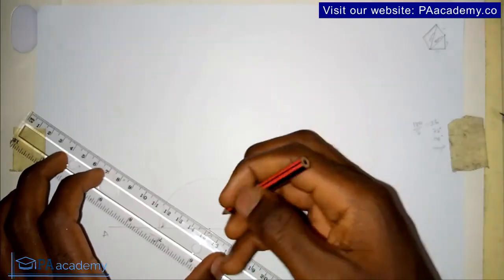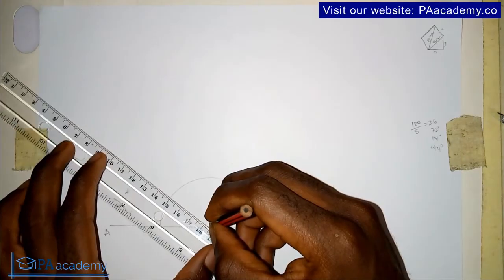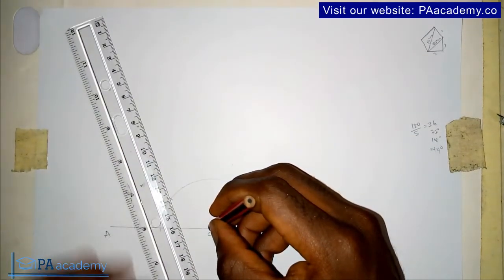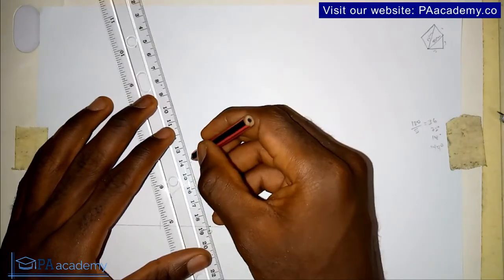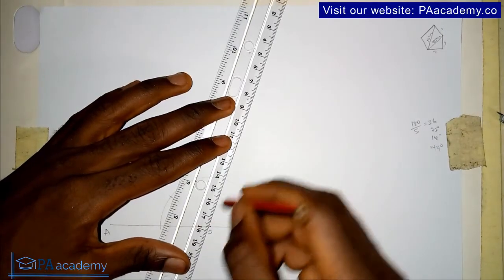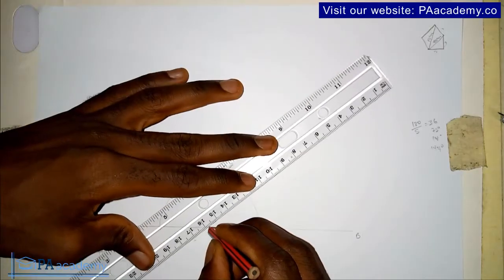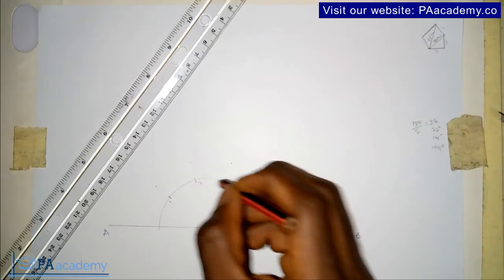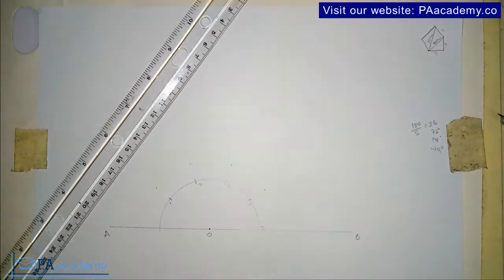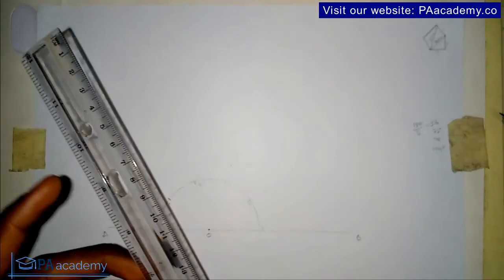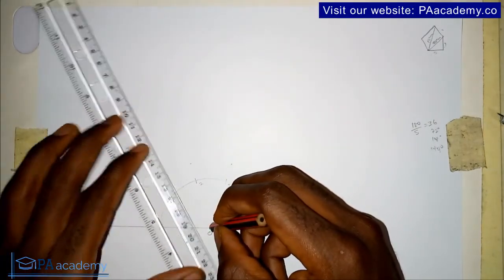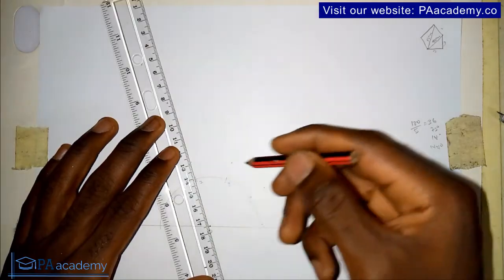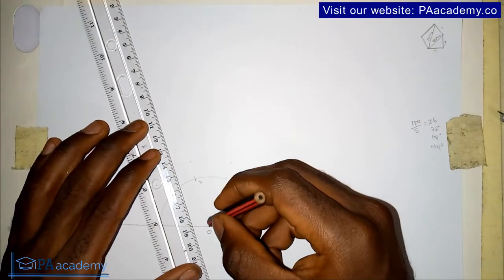The next thing is to note those points on the semicircle. So this is one, two, three, four, and five. Now from point O, I'm going to draw a line from point O passing through points two, three, and four.